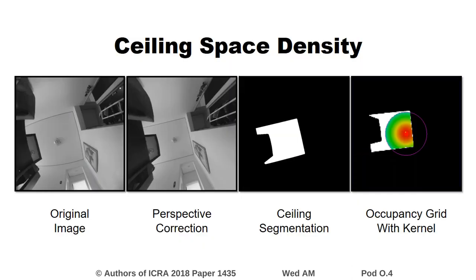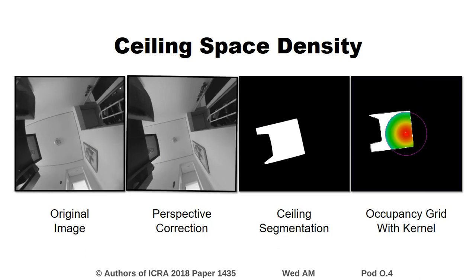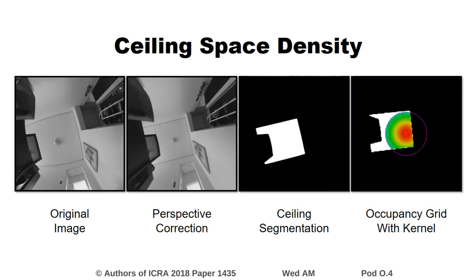The idea is that the same result can be obtained from images taken by an upward-facing camera. Here the original image was taken by a wide-angle lens. After perspective correction, we can apply ceiling segmentation to find the ceiling boundaries.